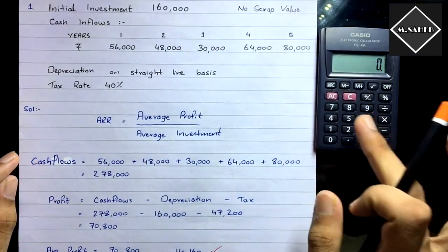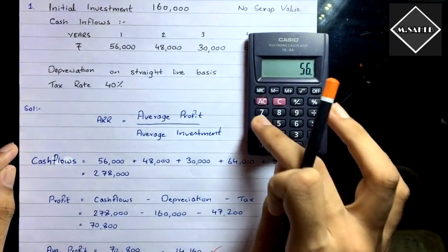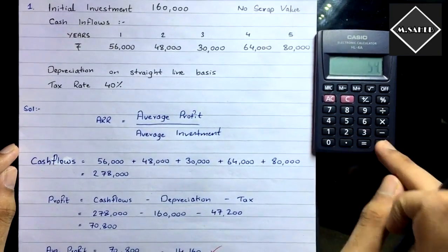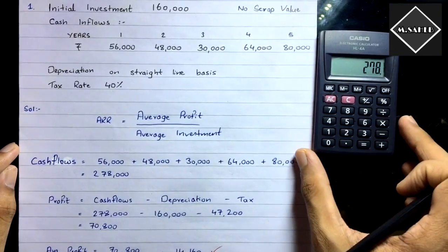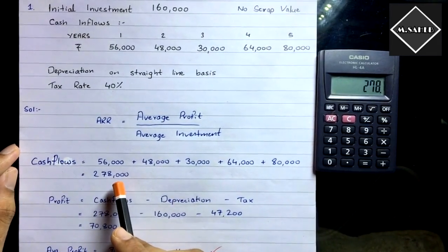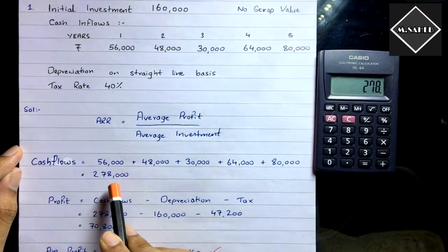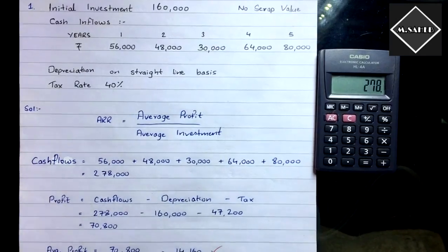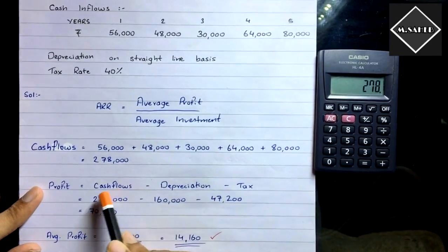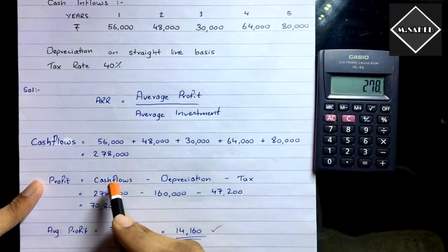Adding those up: 56 + 48 + 30 + 64 + 80 = 278. So total cash inflows = 2,78,000. Now we apply the profit formula: Total Cash Inflows − Total Depreciation − Tax.